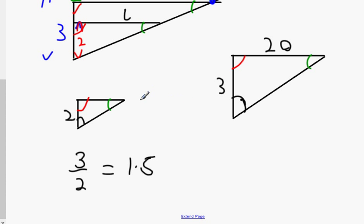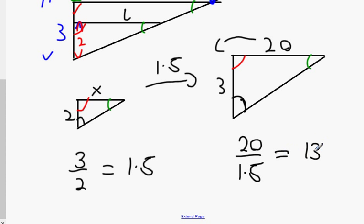So this means that this length here is 1.5 times smaller than 20. What's 20 divided by 1.5? 13 and a third. How many people got 13 and a third? There's two people there, three people.